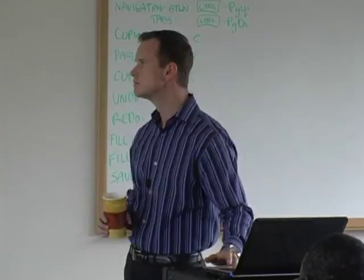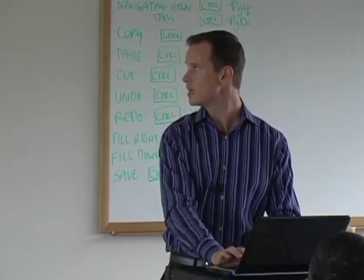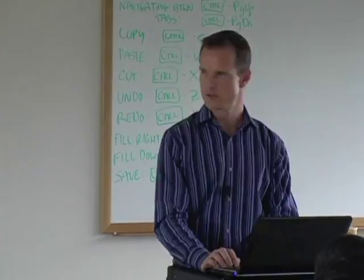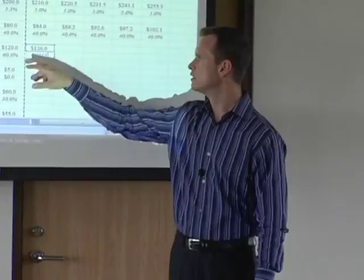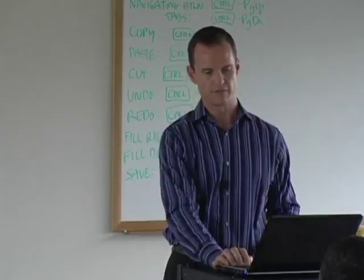Moving right along to gross profit. Gross profit, as we know from having seen the income statement many times, is simply equals revenues minus cost of goods sold. So H7 minus H10 should give us $126 million in year one. The gross profit margin — remember, any time we say margin, we divide that item by revenues — so gross profit margin equals H13 divided by H7, or 60%. Fill those to the right, hit F9 to recalc.